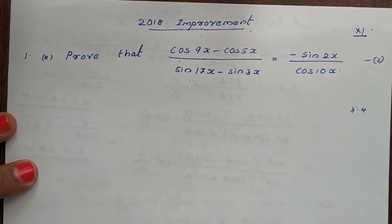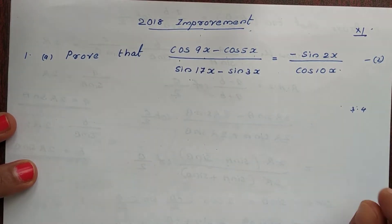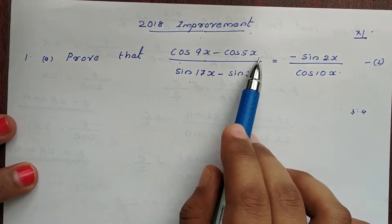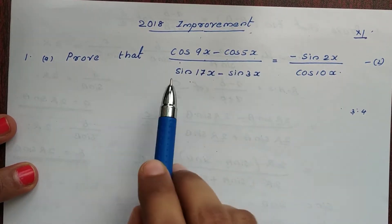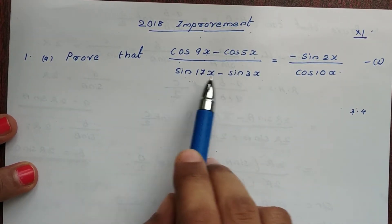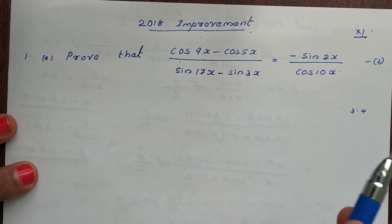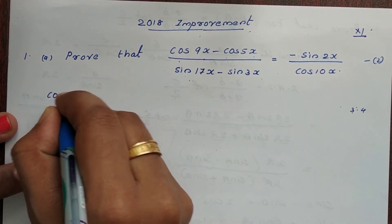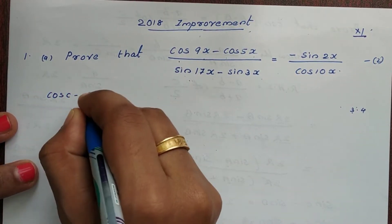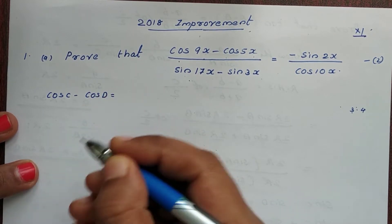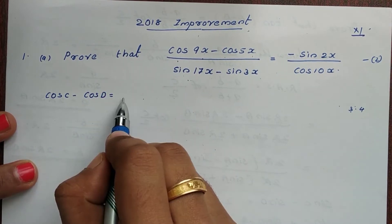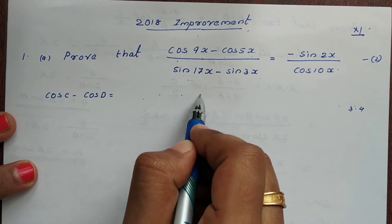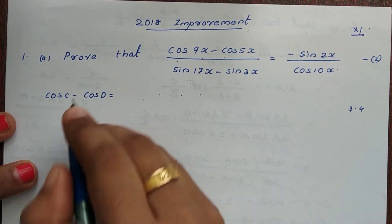So it is the case of cos9x minus cos5x in the numerator, and sin7x minus sin3x in the denominator. We apply the formula for cosC minus cosD in the numerator, and sinC minus sinD in the denominator.